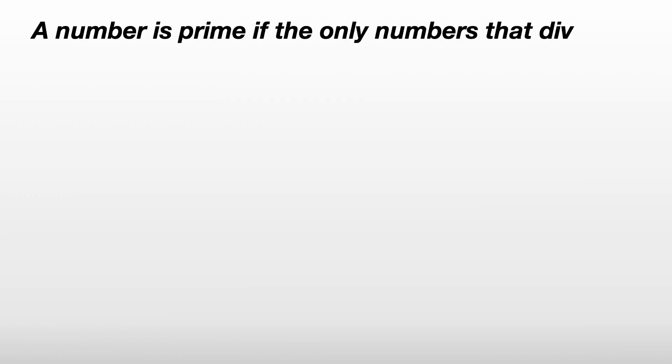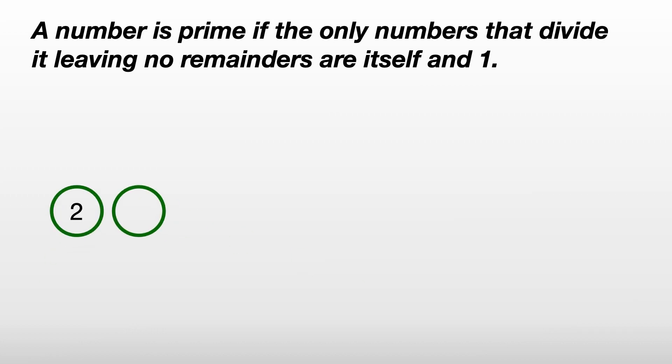A number is prime if the only numbers that divide it, leaving no remainders, are itself and 1. We have 2, 3, 5, and so on.